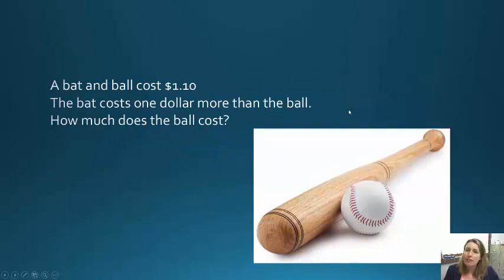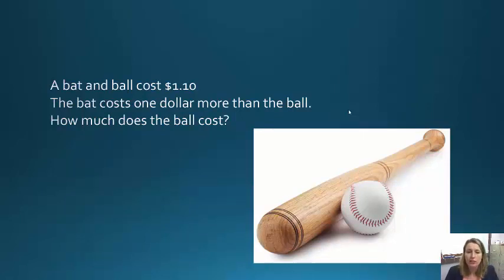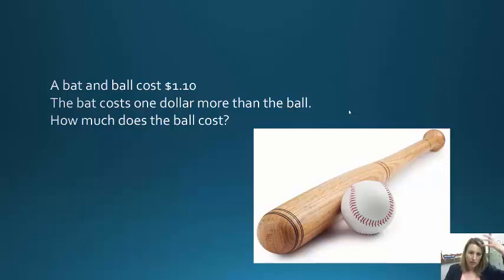The intuitive answer — the answer that comes to almost everybody's mind — is $0.10, and that is something we can't help. I'd be curious to know if any of you didn't get $0.10 pop into mind, but it pops into people's minds. You need to call on System 2, the frontal cortex, to check your work.